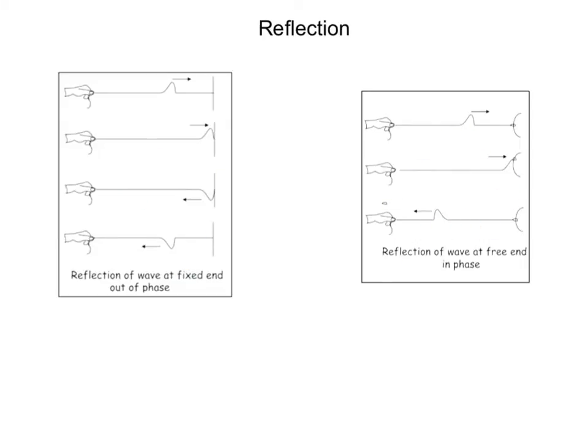For fixed-end reflection, like here, we've got a string attached to a wall. As that wave moves down, it gets reflected off that boundary. And when it's reflected, it's reflected 180 degrees out of phase so that it comes back moving in the amplitude is in the opposite direction as the original direction. So we say that the wave is reflected out of phase.